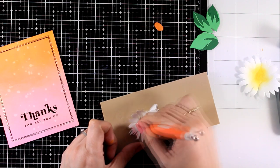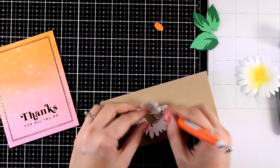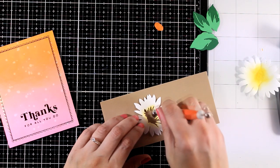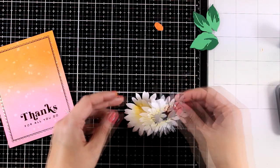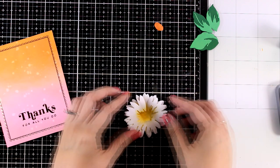On all my die cuts I do add a little bit of movement by using those sculpting tools. You can do that with your fingers if you don't have something similar. And I am going to assemble my die cut flower.